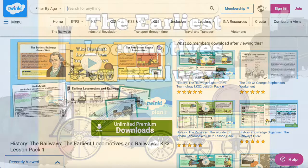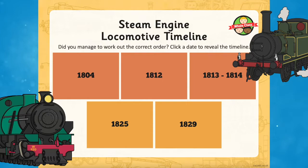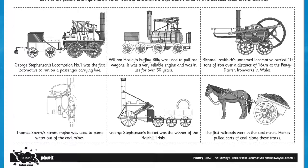Let's start with the Earliest Locomotives and Railways lower key stage two lesson pack. This lesson will teach your class all about the history of the first railway lines in Great Britain and the locomotives which travelled on them. It also explores the development of the first steam locomotives and the people who made them. Children have the opportunity to create their own timeline of early locomotives and railways in order to consolidate their understanding.